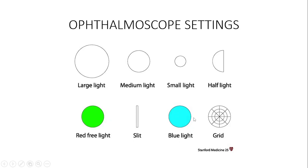The blue light is used when you are performing fluorescein angioscopy, to assess the lesions visible. Use the grid when you want to properly determine or have a rough idea of the distance and space between one lesion and another. So these are the settings you need to be aware of.